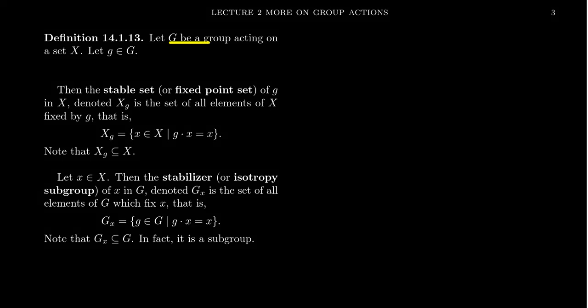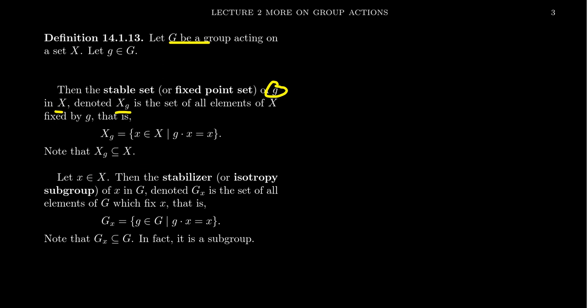Suppose we have a group G acting upon a set X, so X is a G set, and suppose we have some fixed element g inside of G. Using this element, we can define what's called the stable set, sometimes called the fixed point set associated to g inside of X. This is commonly denoted as X sub g — it's a subset of X, some collection of the points that we're acting upon. This is the set of all points which are fixed by little g: X sub g is the set of all elements x inside of X such that g dot x equals x.